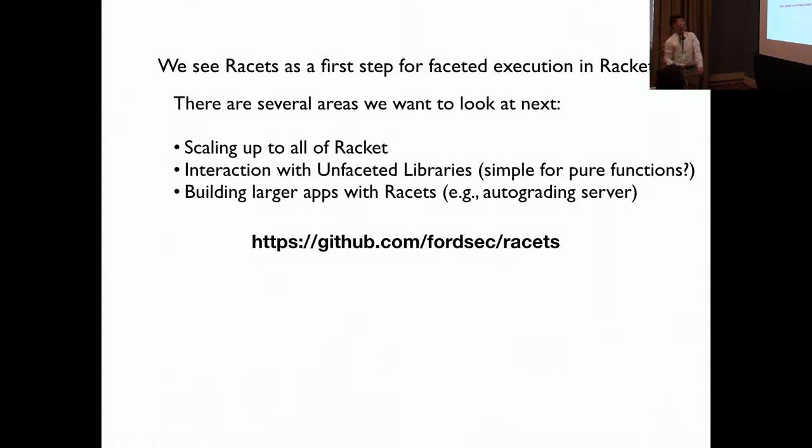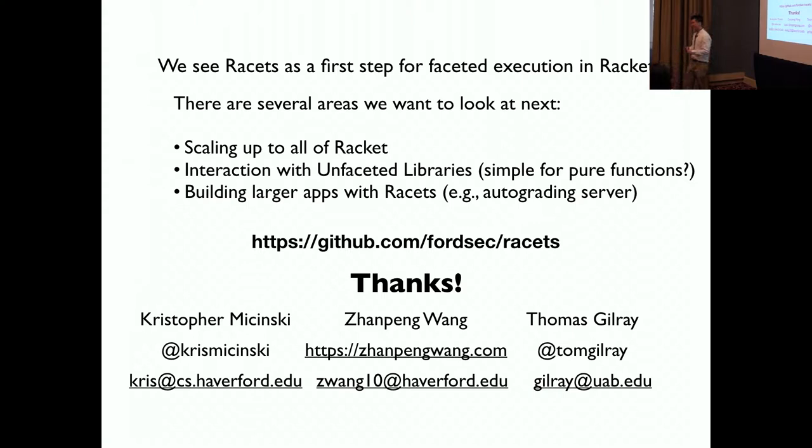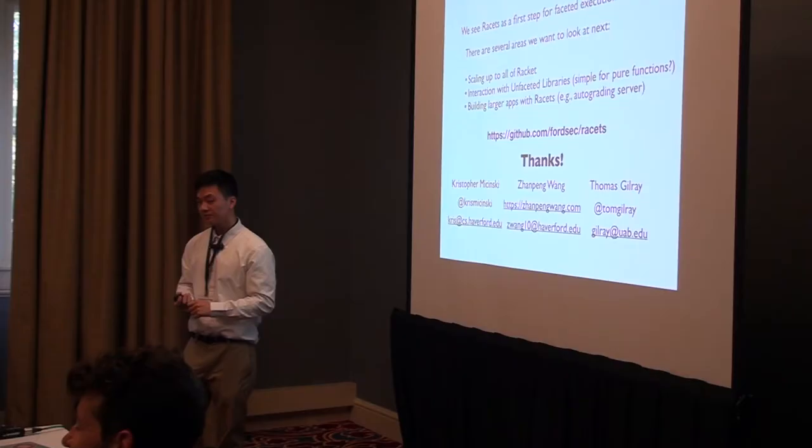We see RACIS as a first step for faceted execution in Racket. However, there are some areas we still need to work on in the future. The first one is to scale RACIS up to all Racket so that you can incorporate faceted execution into all aspects of Racket. Secondly, RACIS needs to interact with unfaceted libraries so that we don't have to rewrite all the existing libraries. And third is building real apps, larger apps, like auto-grading servers with RACIS so that more people can know about RACIS. If you want to know all the details of RACIS, you can check out the Git repo.